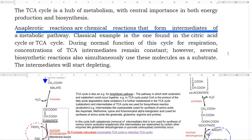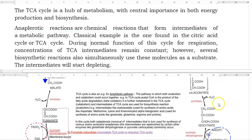The anaplerotic reactions are chemical reactions that form intermediates of a metabolic pathway. A classical example could be understood when you look at the citric acid cycle or TCA cycle. During normal functioning of this cycle for respiration, concentrations of the TCA intermediates may remain constant.